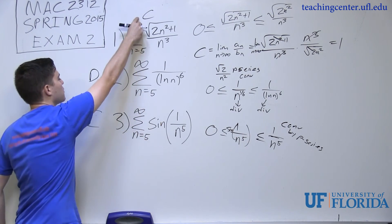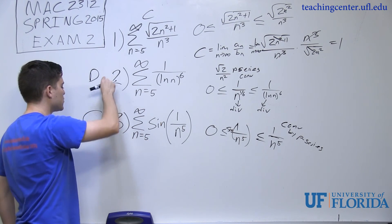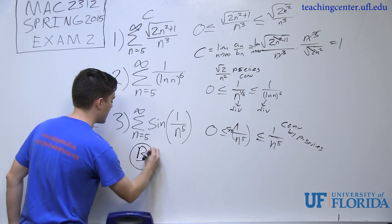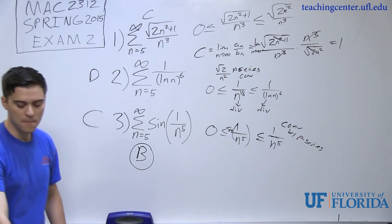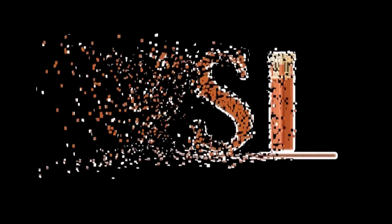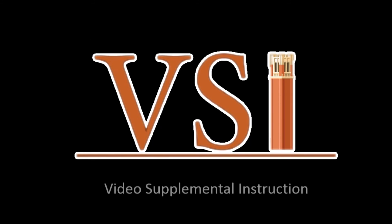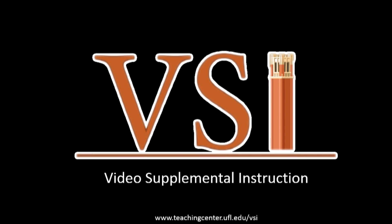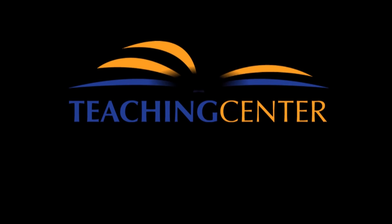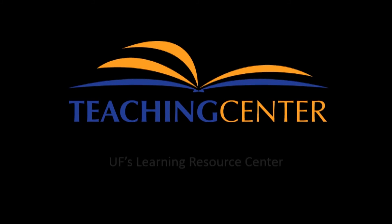So summarizing: series one is convergent by limit comparison, series two is divergent by direct comparison, and series three is convergent by direct comparison. The final answer in the multiple choice is B.